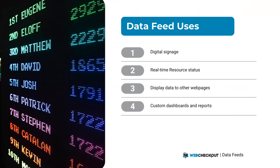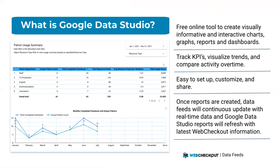Today I'll be using Google Data Studio to make sense of my Web Checkout data. What is Google Data Studio? It's a free online tool to turn data into visually informative reports and dashboards to measure your key performance indicators, visualize trends, and compare activity over time. Reports in Google Data Studio are interactive, easy to set up, easy to customize, and easy to share with others. And best of all, once reports are created, you won't have to spend time recreating or updating them with fresh data — by connecting Web Checkout's data feed, data is provided in real time and reports refresh automatically.